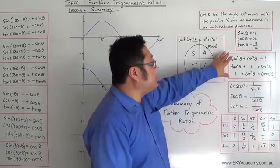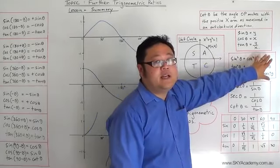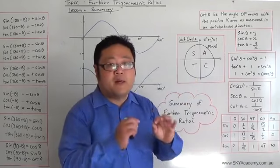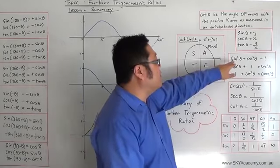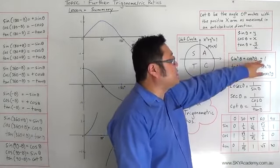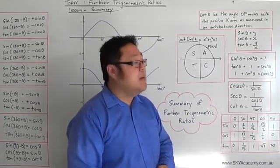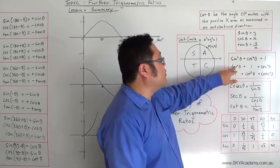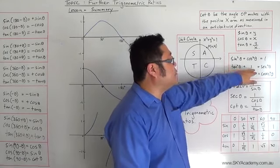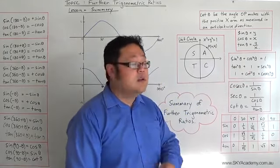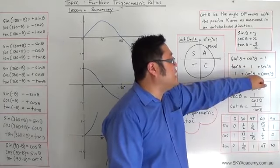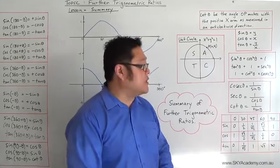We also looked at the fundamental identity, which is really just an extension of the unit circle and Pythagoras' theorem, and we worked out that sin squared theta plus cos squared theta is equal to 1. By dividing both sides by cos squared theta, we get tan squared theta plus 1 is equal to sec squared theta. Dividing both sides by sin squared theta, we get 1 plus cotangent squared theta equals cosec squared theta.